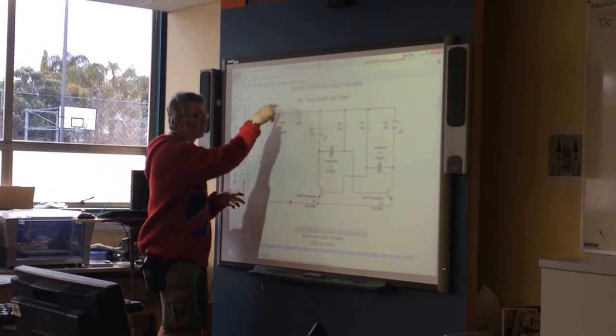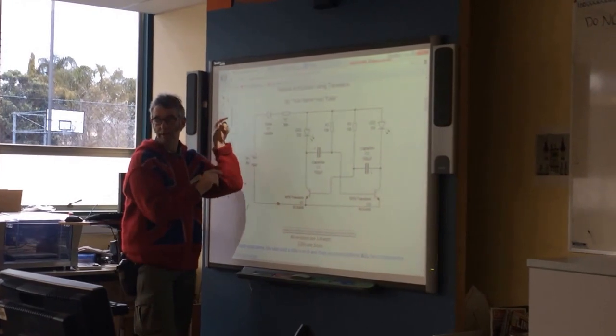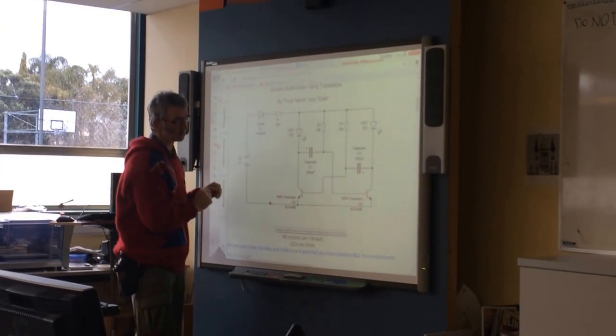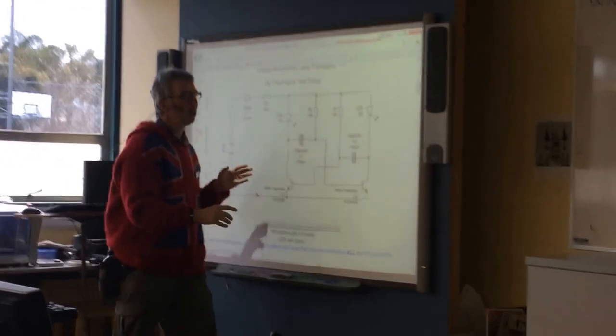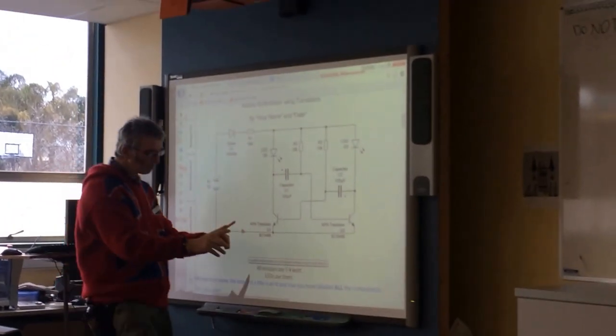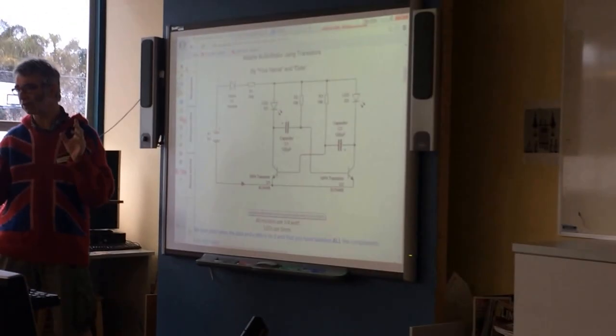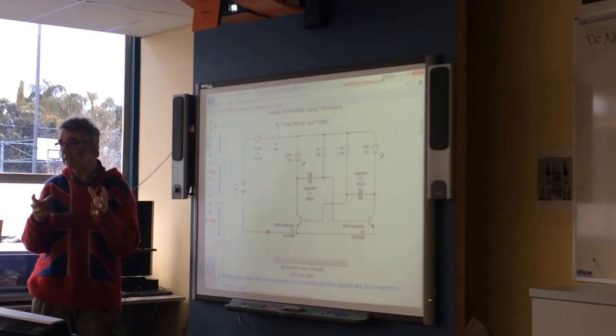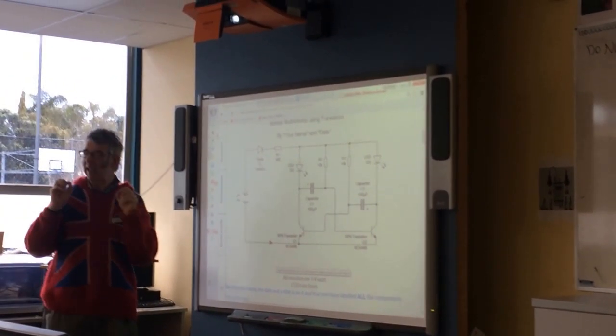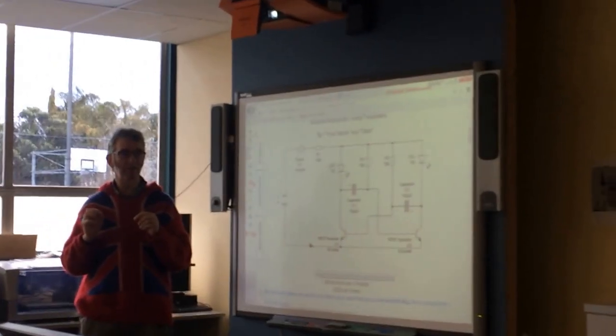So basically these three components, in other words that section there, supply a nice safe current to the rest of the circuit. Now, this bit here and this bit here are identical. When you first switch it on, even though these transistors are the same model, probably manufactured in the same batch on the same machine, they will not be 100% identical. They will be slightly different.